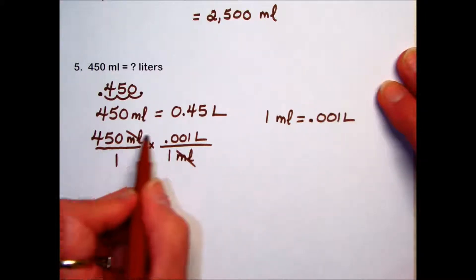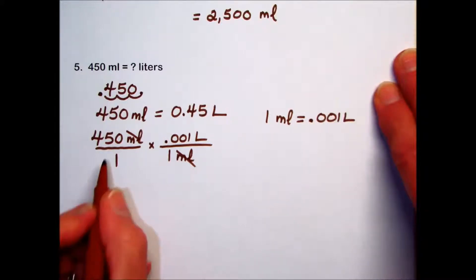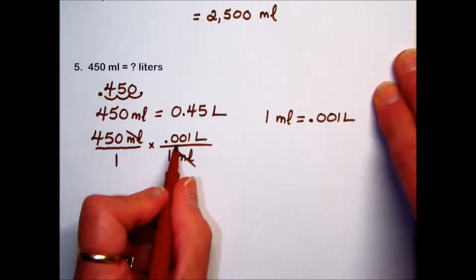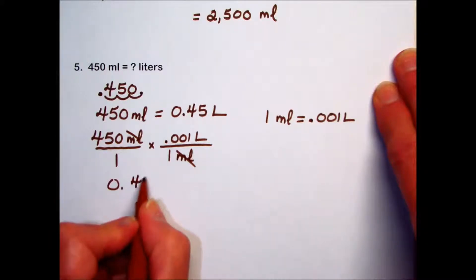Leaving us with multiplication of the two numbers in the numerator. Multiplying 450 by 0.001 gives us 0.45 liters.